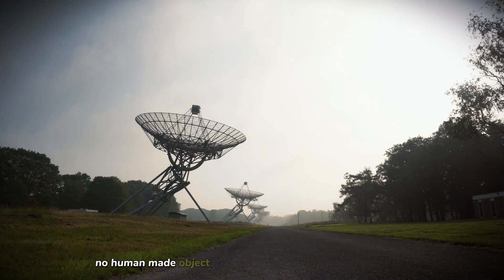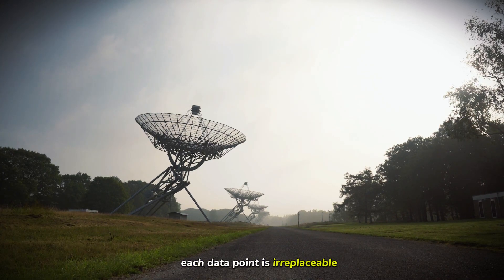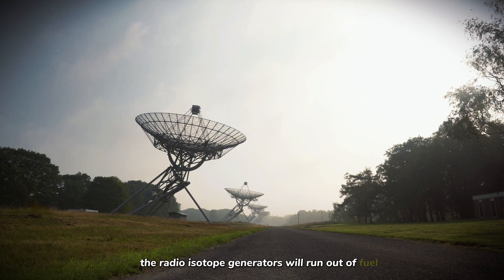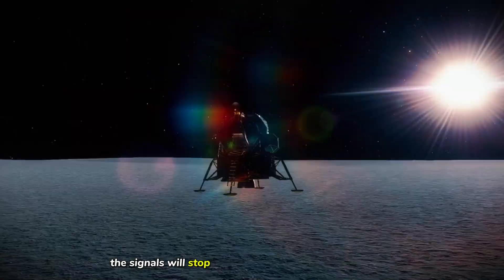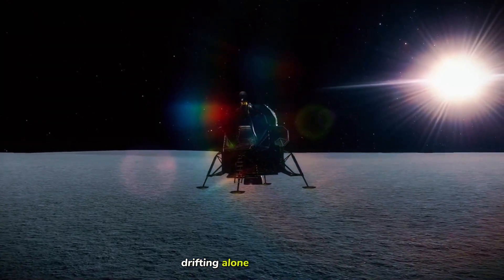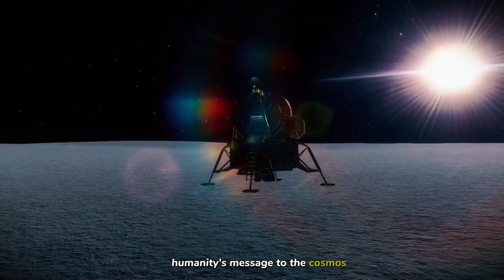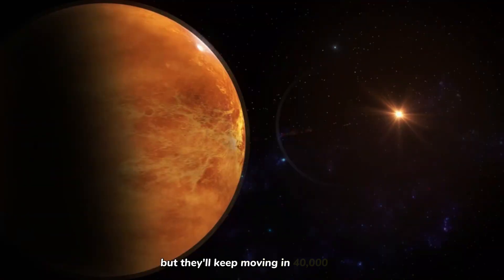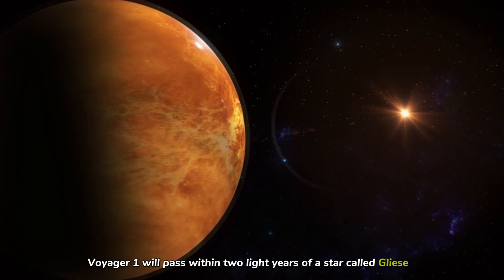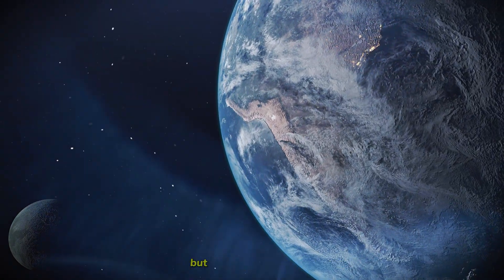No human-made object has ever sampled this environment before. Each data point is irreplaceable. By the early 2030s, the radio isotope generators will run out of fuel. The signals will stop. Voyager 1 and Voyager 2 will go silent, drifting alone through the dark, carrying their golden records, humanity's message to the cosmos. But they'll keep moving. In 40,000 years, Voyager 1 will pass within two light years of a star called Gliese 445. Neither probe will ever return home, but their mission won't end.